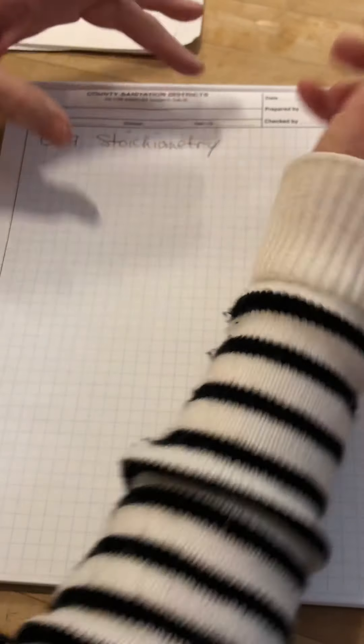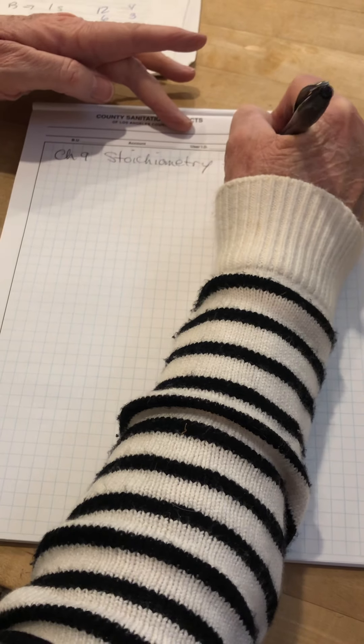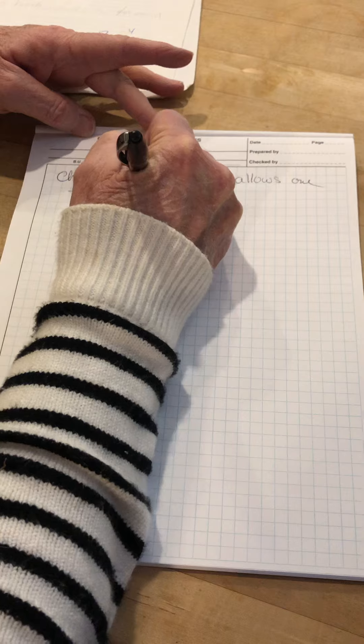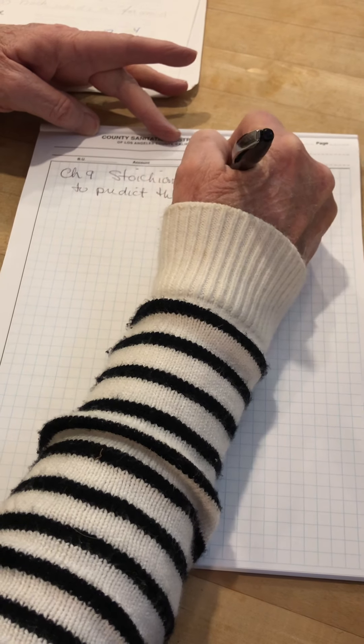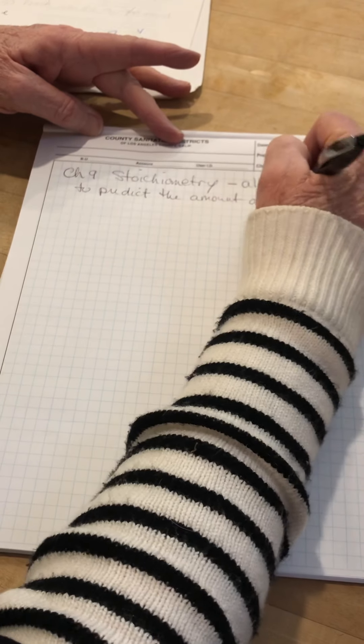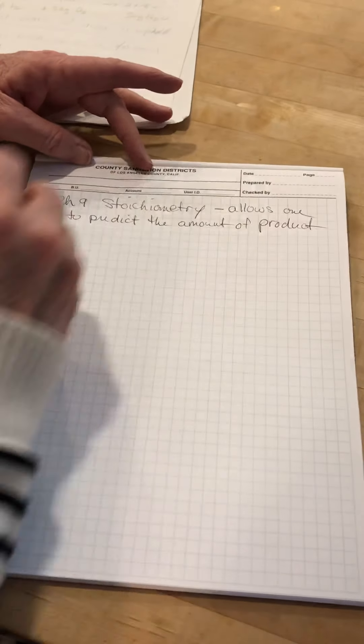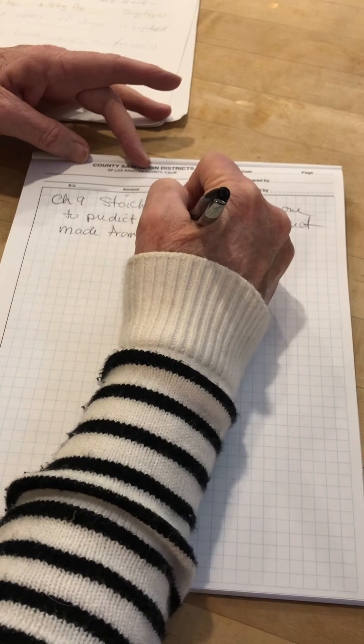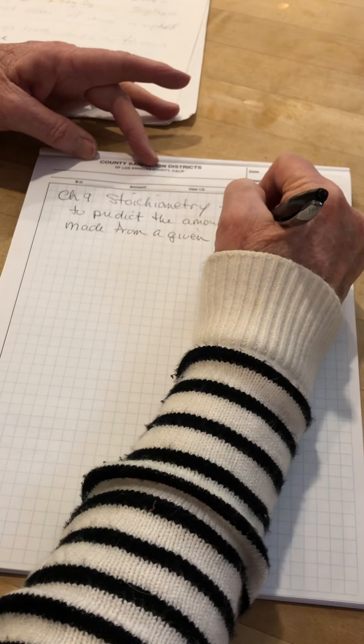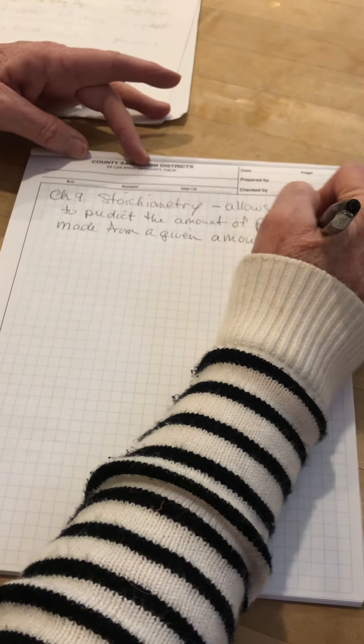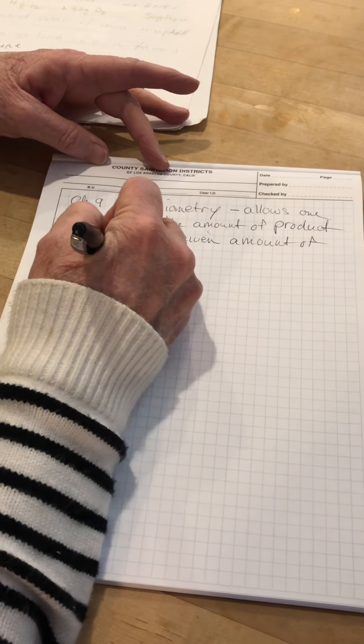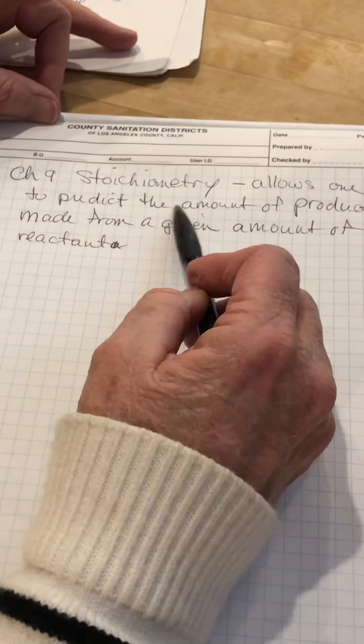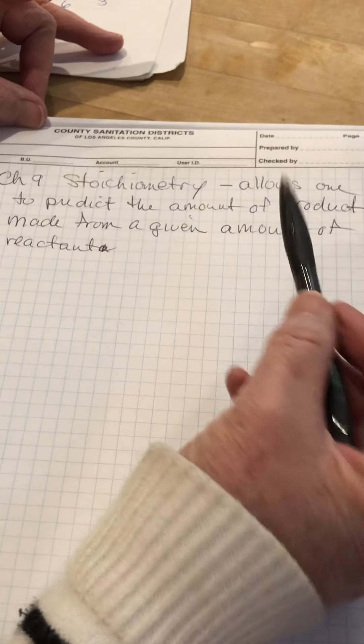What Stoichiometry allows you to do is it allows one to predict the amount of product made from a given amount of reactant. Okay, so Stoichiometry allows one to predict the amount of product made from a given amount of reactant and vice versa.